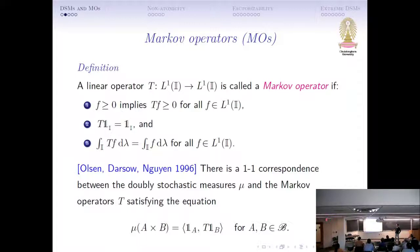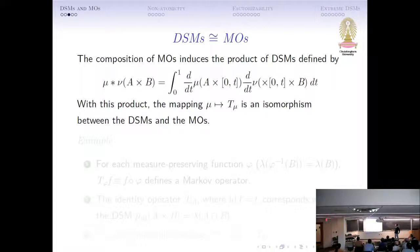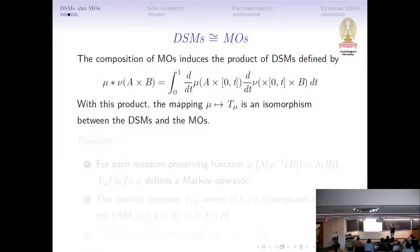And it's defined this way. If you have a Markov operator, you can construct a DSM, and if you have a DSM, then you can define a corresponding Markov operator. Now, the Markov operator has decomposition — as you have two Markov operators and compose them, you get another Markov operator. With that, you have a product of DSMs induced by that composition operator, and that product of DSMs can be defined this way.